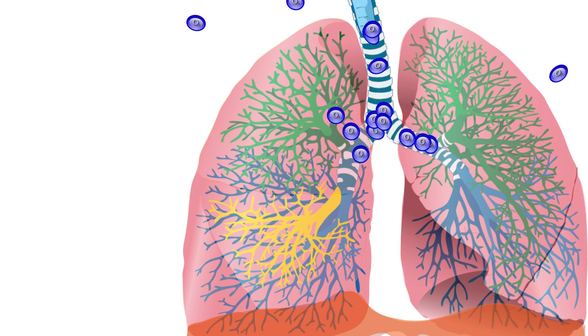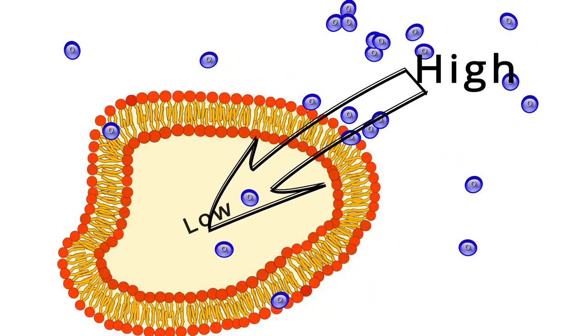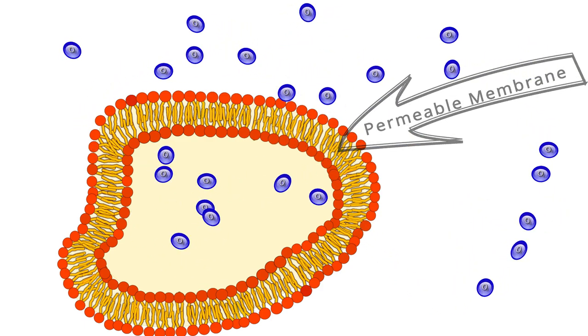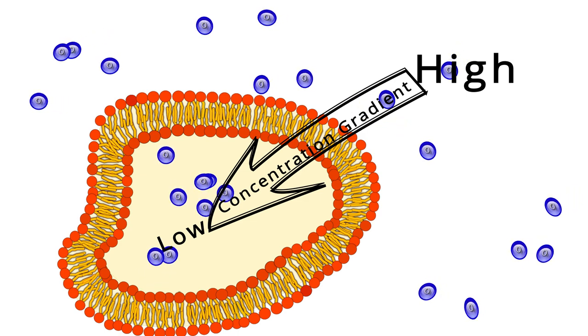When cells use simple diffusion, molecules naturally move from an area of high concentration to one of low concentration through a permeable membrane. The difference between the two sides is called the concentration gradient.